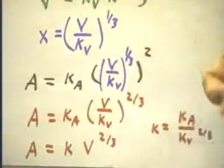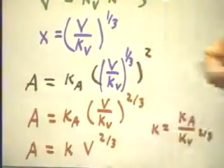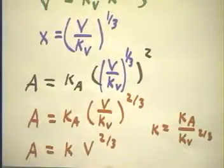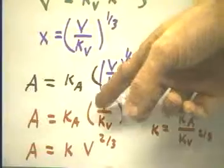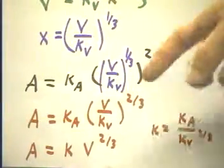We can expand this square. We can square the one-third power—that's going to give us the two-thirds power by the laws of exponents, which you should be familiar with. And that's going to essentially say that the area is k_A times V to the two-thirds over k_V to the two-thirds.